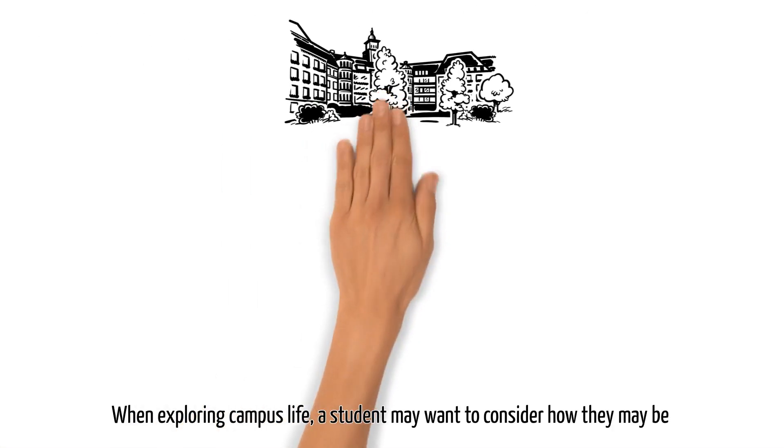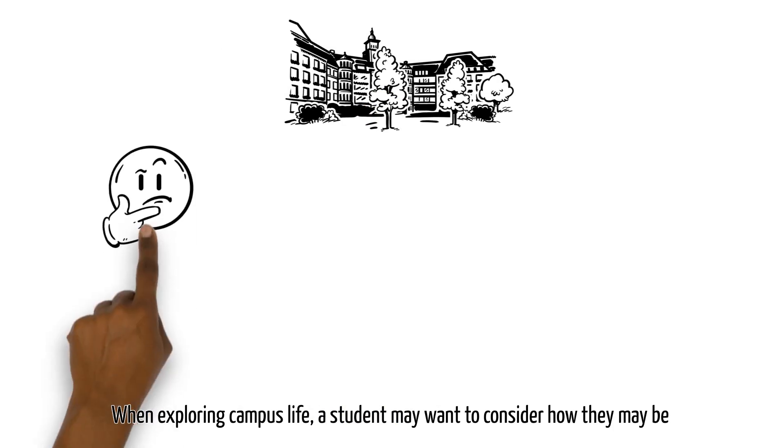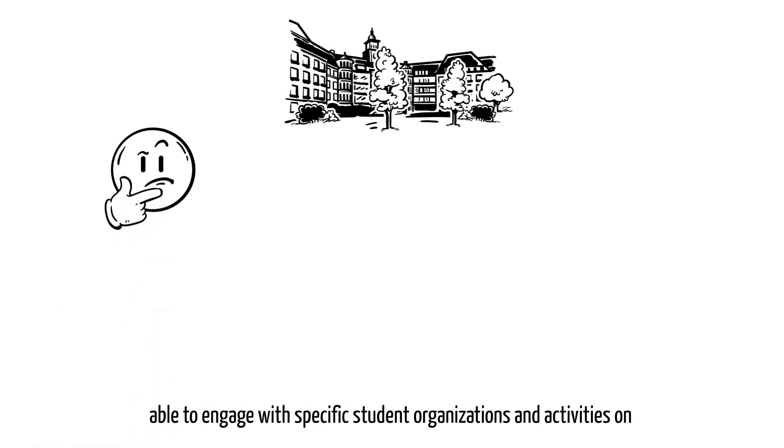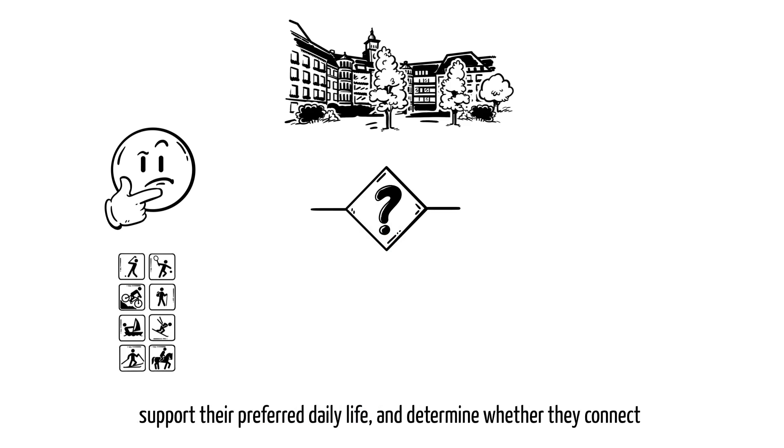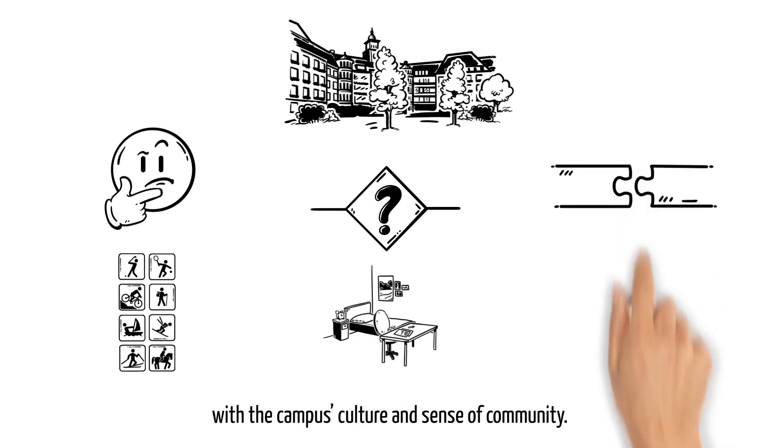When exploring campus life, a student may want to consider how they may be able to engage with specific student organizations and activities on campus, decide whether housing, food, and transportation services will support their preferred daily life, and determine whether they connect with the campus's culture and sense of community.